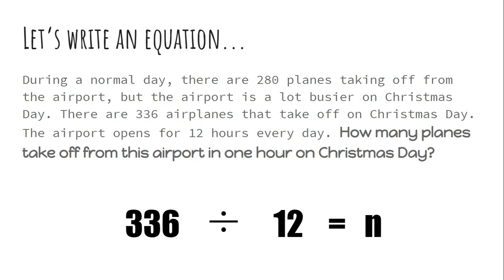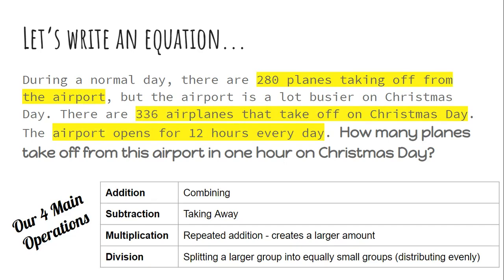Our learning target was all about determining the operation needed to solve a word problem. We talked about our four main operations — that's a good thing to write down as notes. You can pause or replay this video as many times as you need. The three-read strategy is great for any word problem no matter what operation you're doing. Think of it as a story and use all the information you know to make a good decision. Make sure to reach out to your teacher if you have questions.